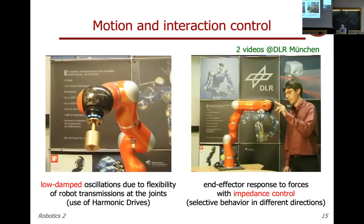By contrast, conventional industrial robots may weigh 130–250 kilograms and carry only 5 kilograms of payload. Here, through control, the same accuracy is guaranteed despite the large payload-to-weight ratio. However, KUKA lightweight robots use harmonic drives, which introduce flexibility in the structure — exactly the spring model we have seen between two masses. The motor is not rigidly connected to the link; there is a compliant transmission.